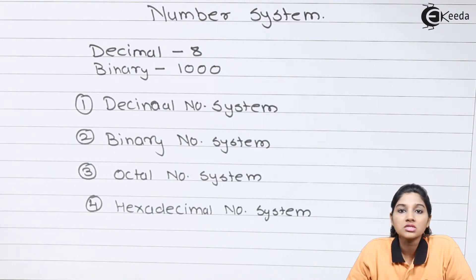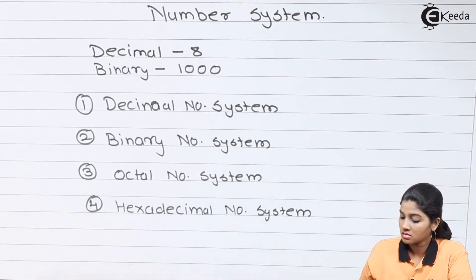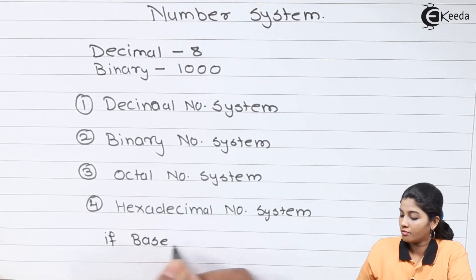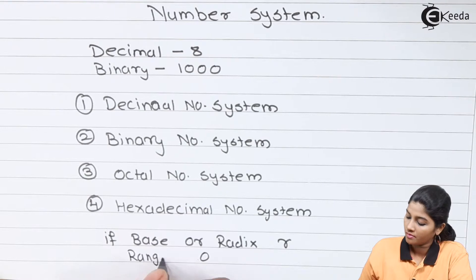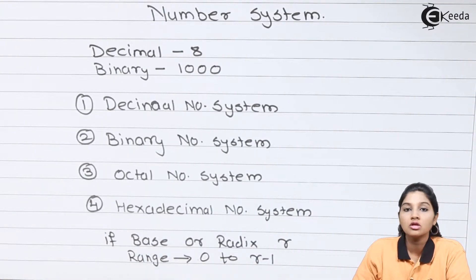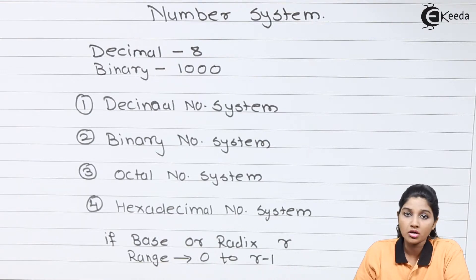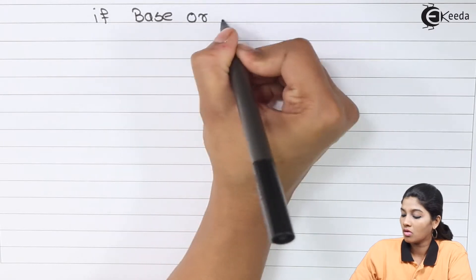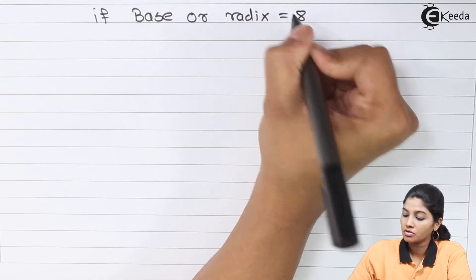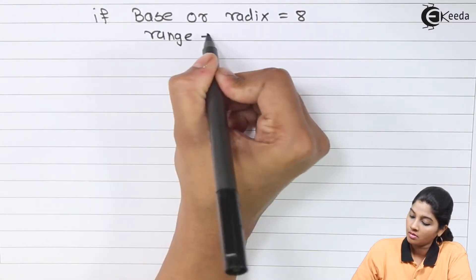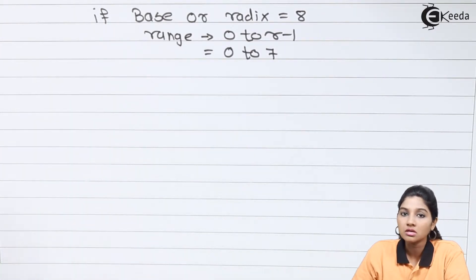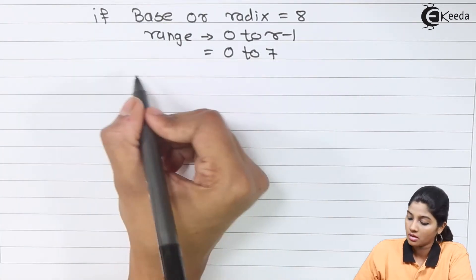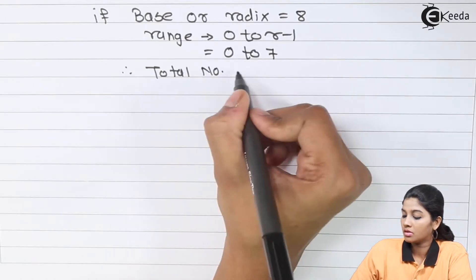The base or radix of a number system, if it is r, then the total numbers present in the system have a range from 0 to r-1, and the total count of numbers becomes r. For example, if the base or radix is 8, the range becomes 0 to 7, and the total numbers present in the system having base 8 becomes 8.